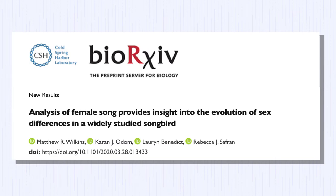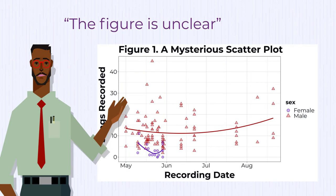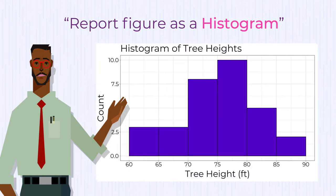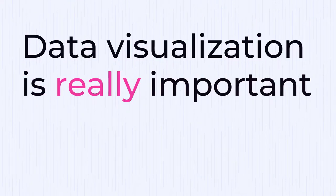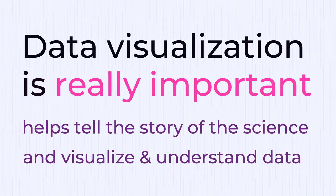Before the paper was accepted for publication, a scientist who reviews papers said that the figure was unclear and suggested that the scientists instead report the number of male and female songs as histograms. Data visualization is really important because it helps tell the story of the science and helps you visualize and understand the data.